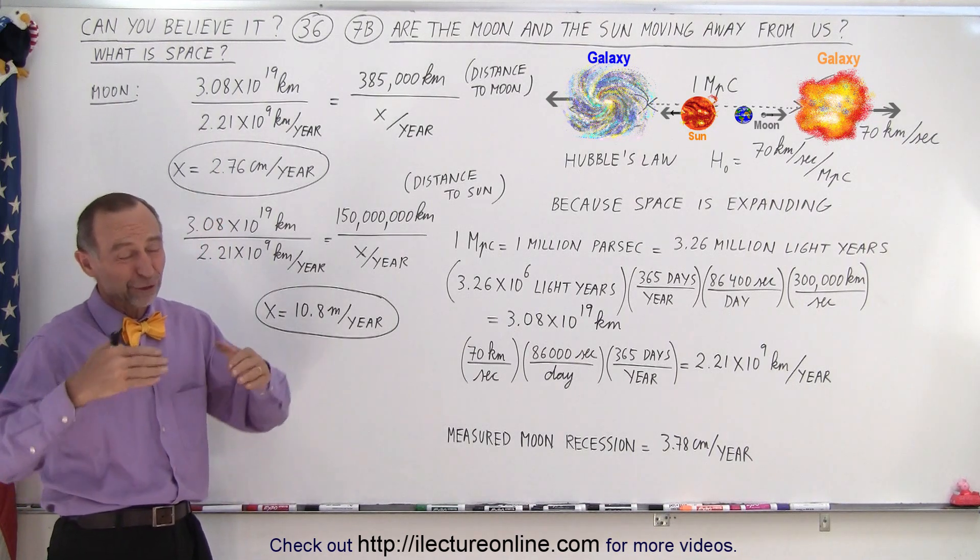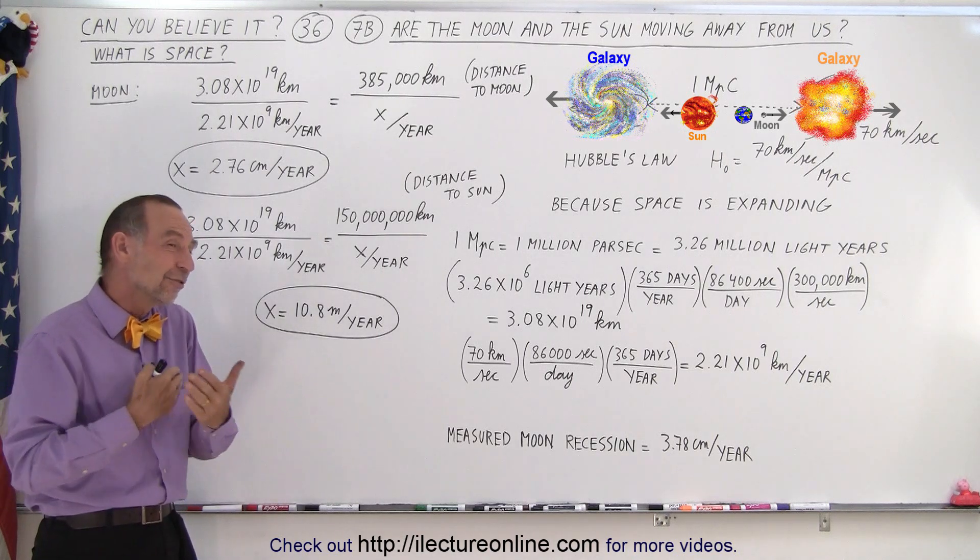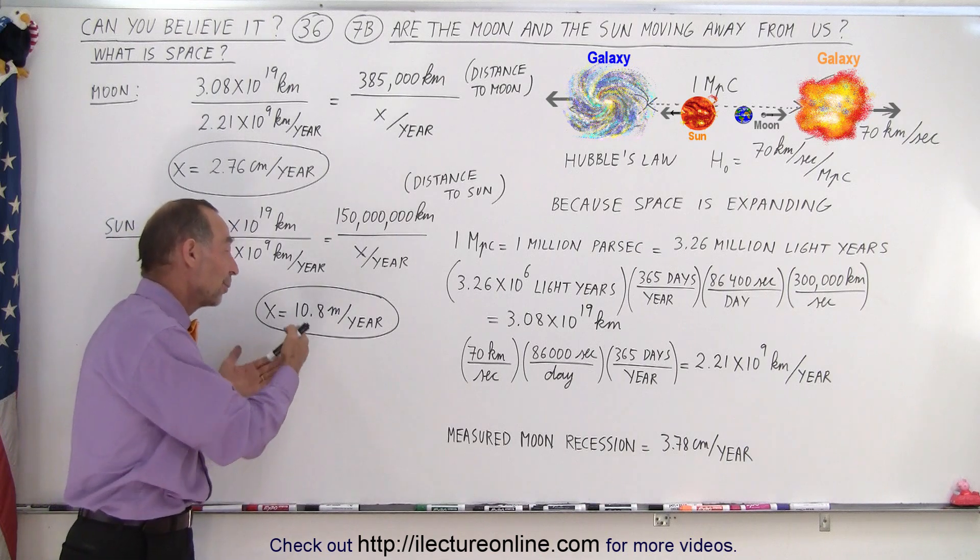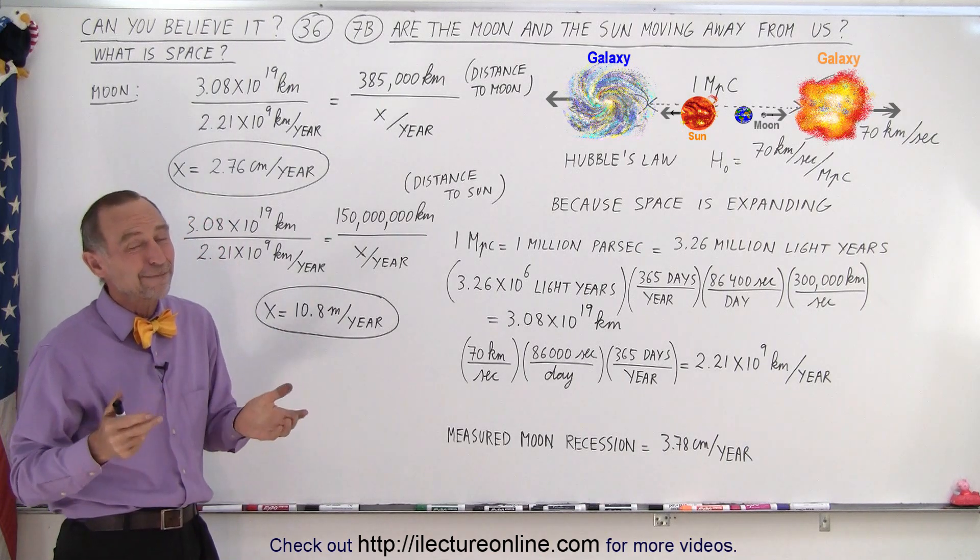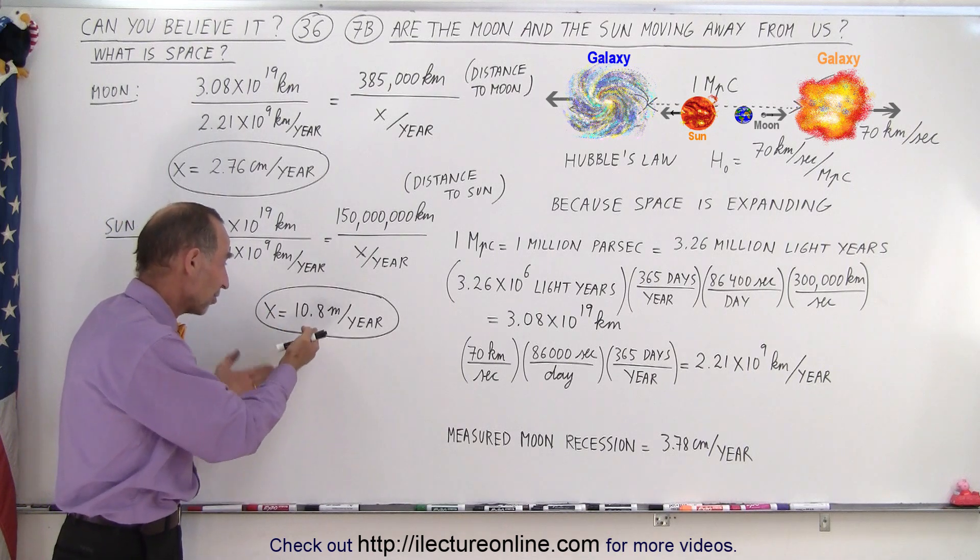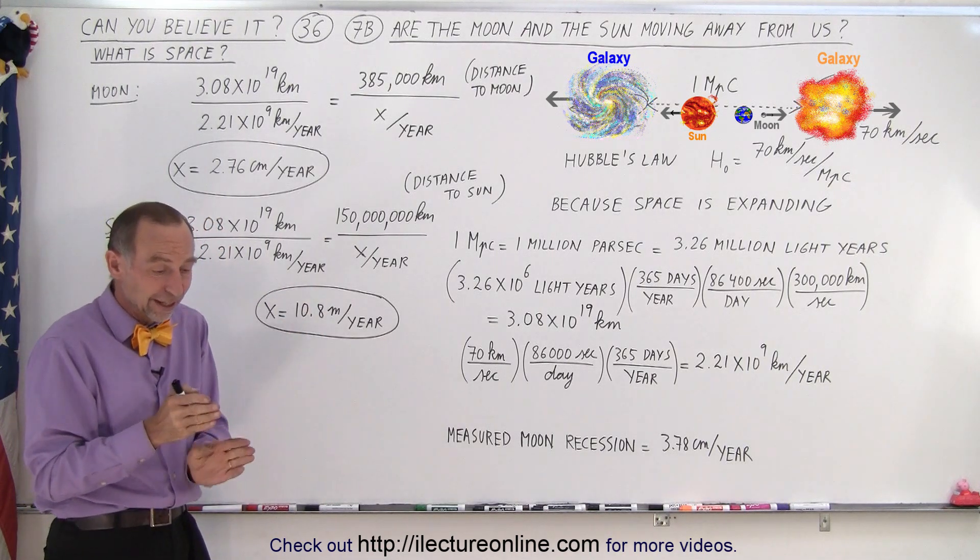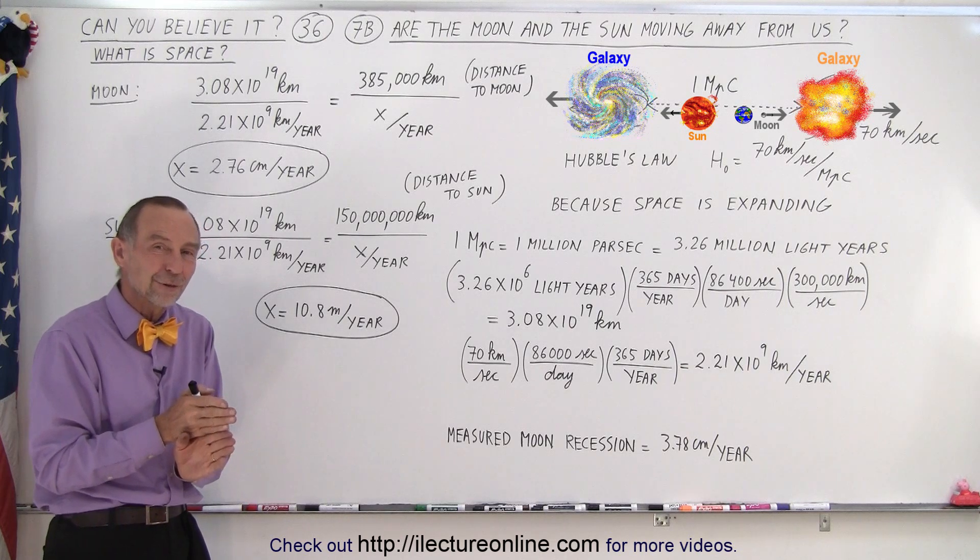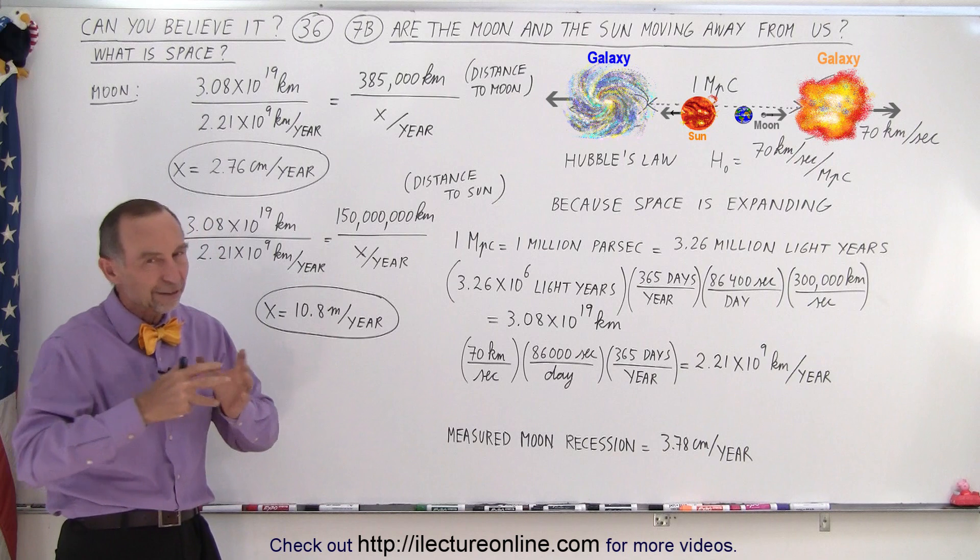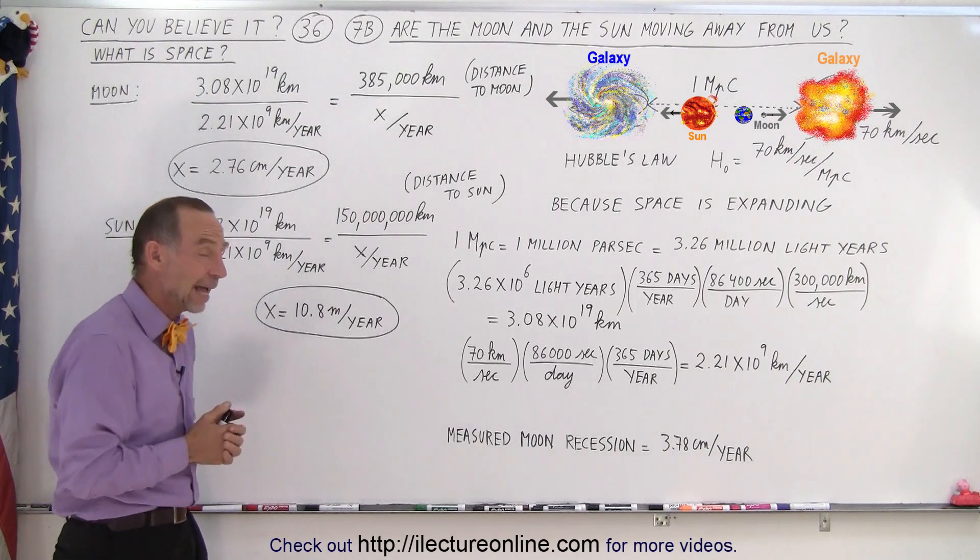Now are we able to measure that? That's a lot more difficult to do because the sun doesn't have a solid surface and it's very difficult to measure the distance between the earth and the sun. So are we indeed moving away from the sun at that rate? It's very difficult to measure because 10.8 meters, that's a very, very slow velocity that is virtually not measurable. So in the case of the earth and the sun, it's very difficult to verify that that's indeed happening.